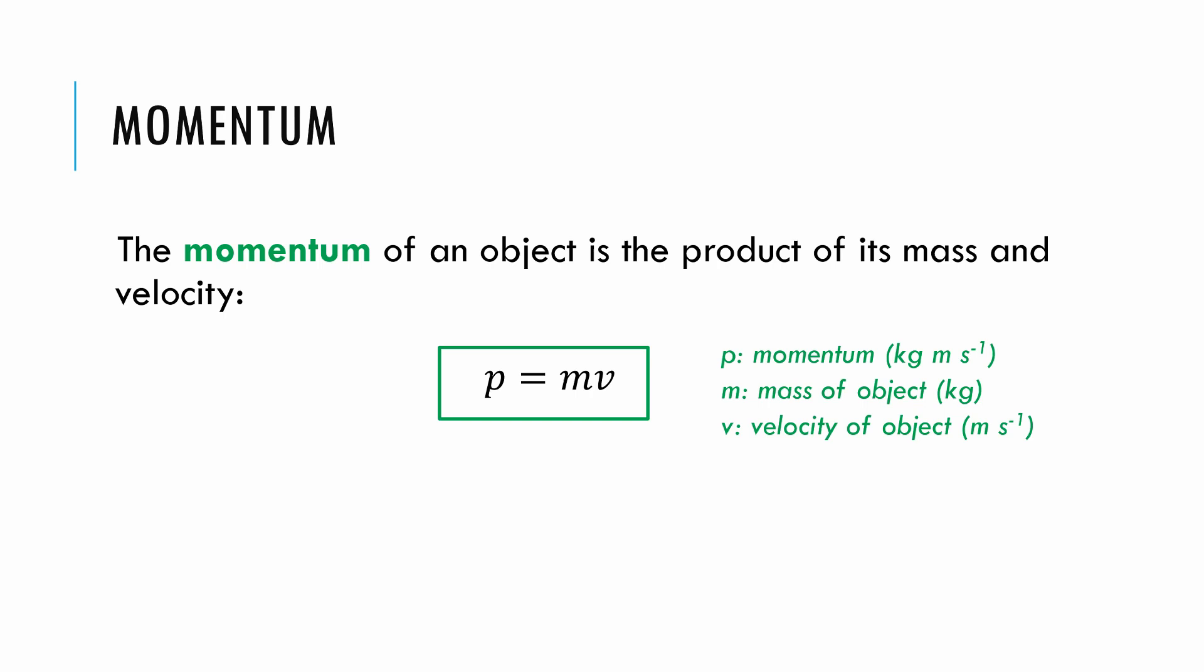This would make momentum a vector. Of course, the IB cruelly does not put any vector bars on anything in the data booklet because they want you to understand what is and what isn't a vector, so you need to remember which things are vectors and which aren't. Velocity is a vector, mass is a scalar. When you multiply a scalar by a vector, you get a different sized vector. So momentum is a vector, as is velocity, which means momentum has direction.